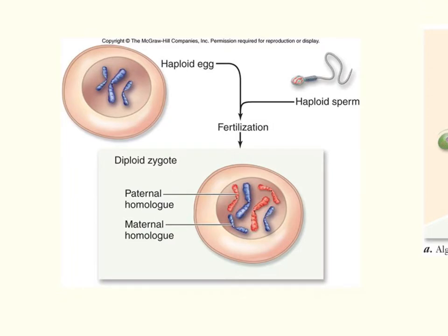Meiosis is cell division that produces haploid cells. A haploid cell has half the number of chromosomes, or one set. Fertilization is the fusion of gametes — gametes are specialized haploid cells. The fertilization produces a diploid zygote, so two gametes that are haploid will fuse together to produce a diploid zygote.